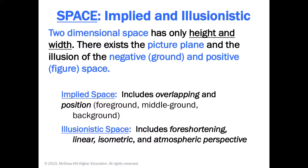It applies an illusionistic space. Two-dimensional space has only height and width — we're talking about paintings here. There's the picture plane and the illusion of negative and positive space. Implied space includes overlapping and position: foreground, middle ground, background. Illusionistic space includes foreshortening, linear perspective, isometric perspective, and atmospheric perspective.